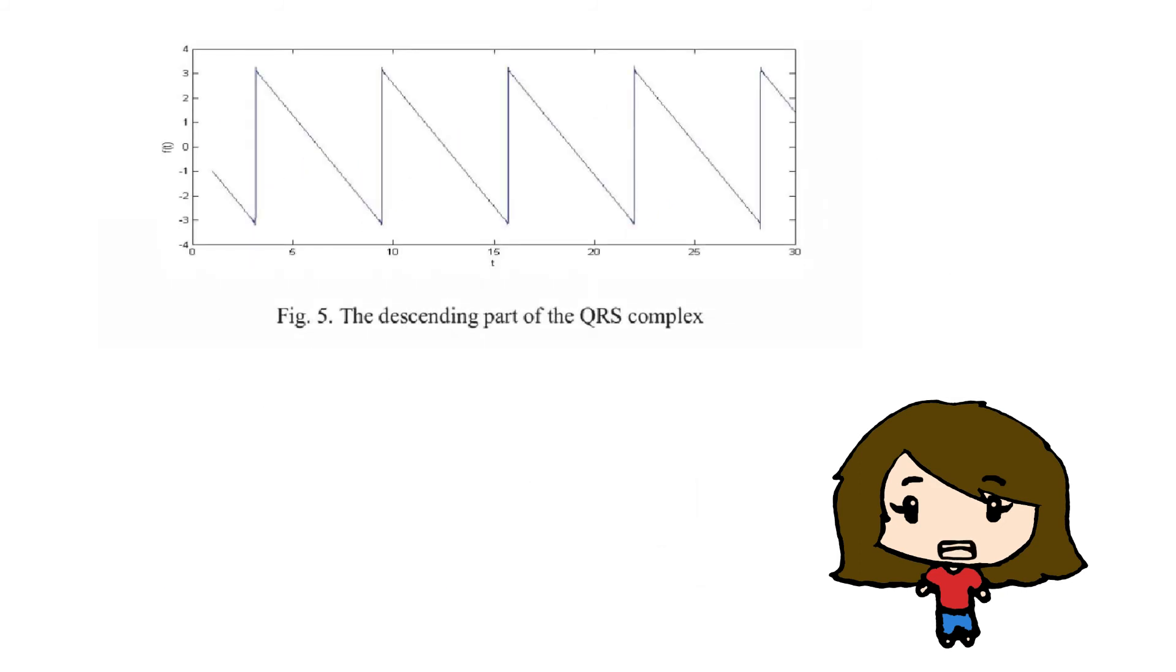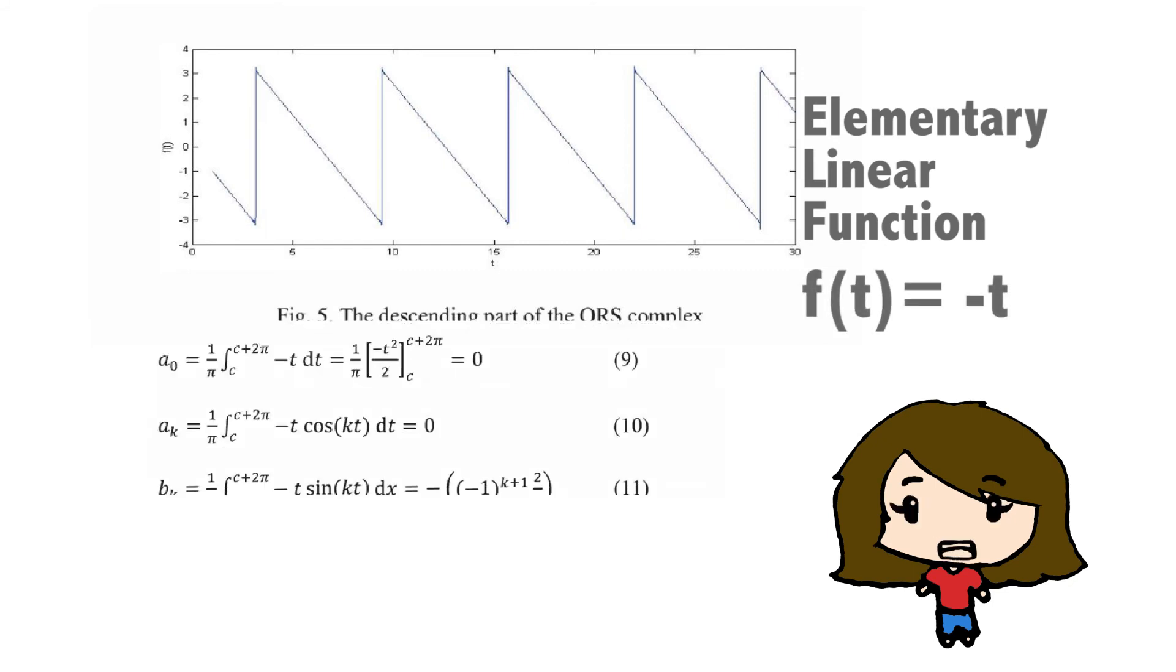For the descending triangular waveform, we use the elementary linear function, f(t) equals negative t. Decomposition using Fourier series results in equation 12 as shown.